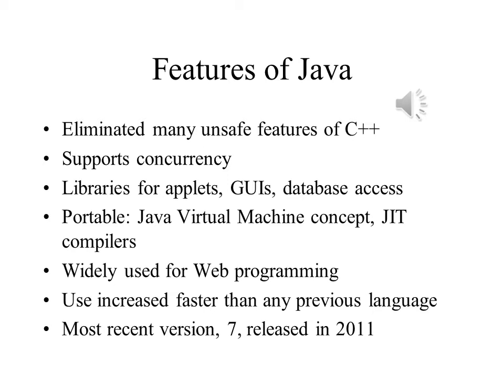Java has grown in popularity more quickly than just about any other language. Its most recent release is version 7, which was released in 2011, with its most recent update, update 51, coming out in January 2014.